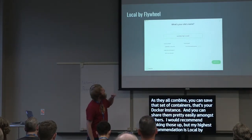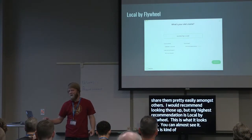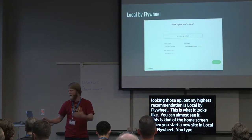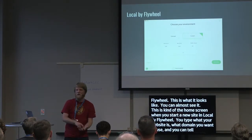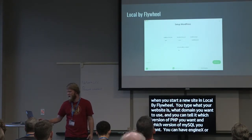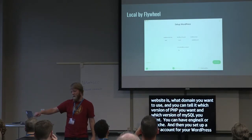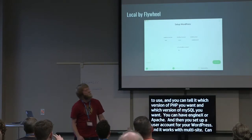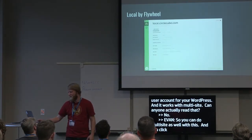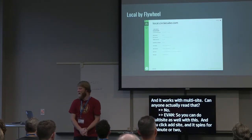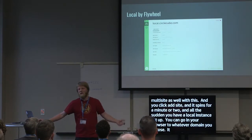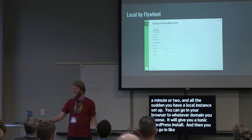Here's what Local by Flywheel looks like. When you start a new site, you type in your website name, give it a domain, choose which version of PHP and MySQL you want, and which kind of server — Nginx or Apache. You set up a user account for your WordPress install, and it even works with multisite. You click 'Add Site,' it spins for a minute or two, and then you have a local instance. You can go to your chosen domain in the browser and get a basic WordPress install.